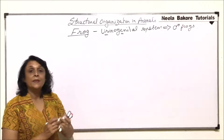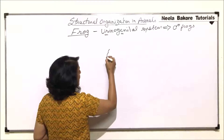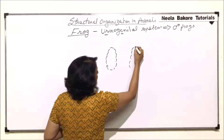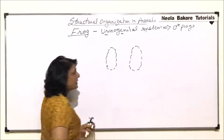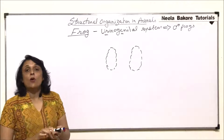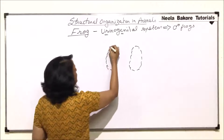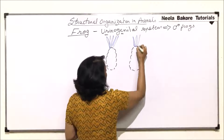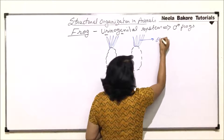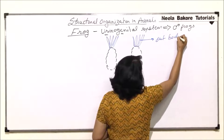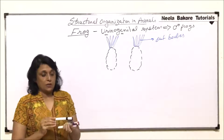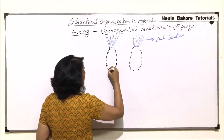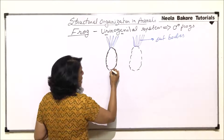Let us first talk about the excretory part. Excretion is done by a pair of kidneys, which are large structures. On the kidney are present many finger-like structures called fat bodies. The kidney is the structure which removes nitrogenous waste.